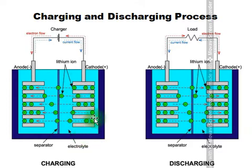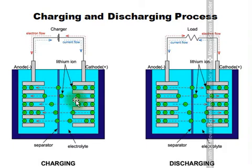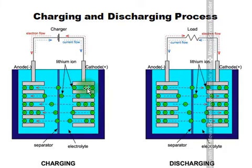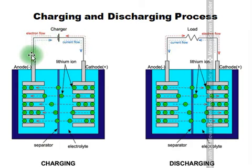Once the external source is provided to the battery, due to the oxidation reaction at the cathode, electrons are released. These electrons are lost from the cathode and move through the external path, through the source.